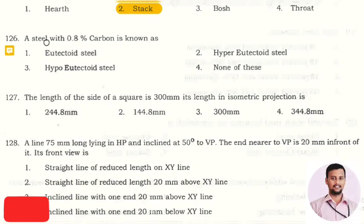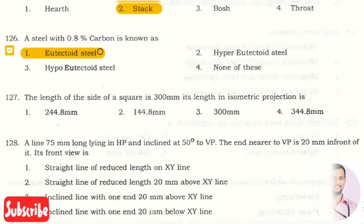The next question is: a steel with 0.8% carbon is known as? Option one, that is eutectoid steel. So the steel which is having 0.8% carbon is known as eutectoid steel.